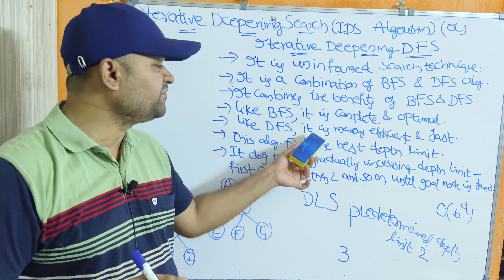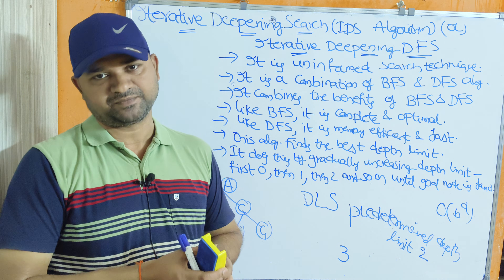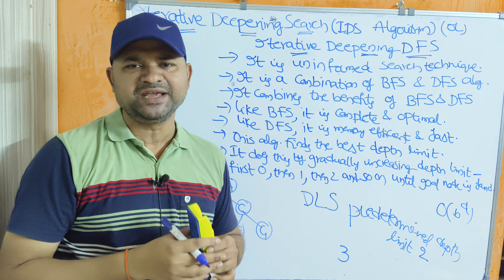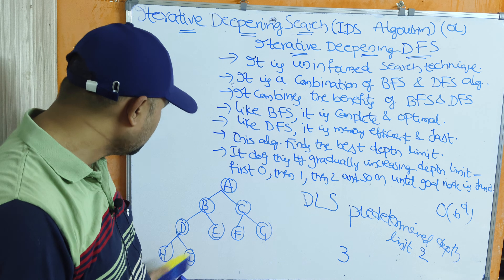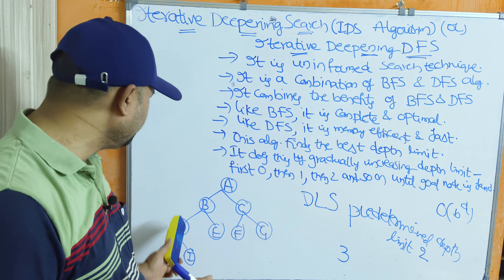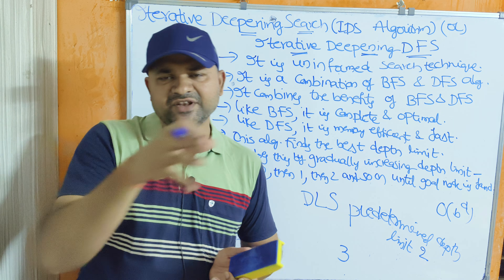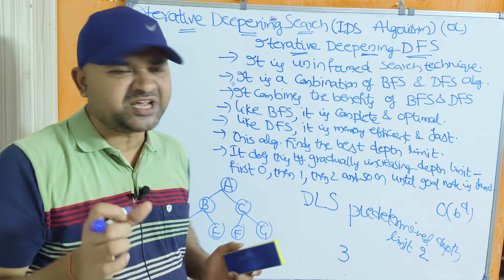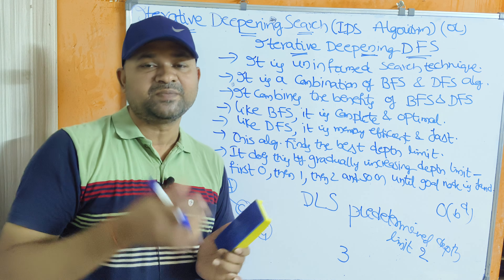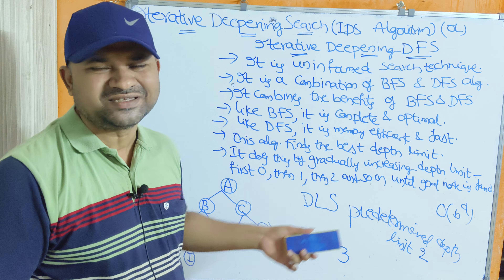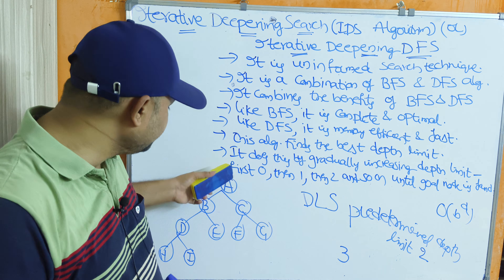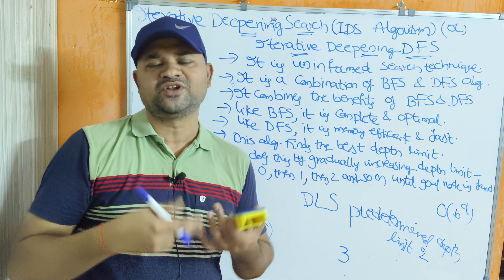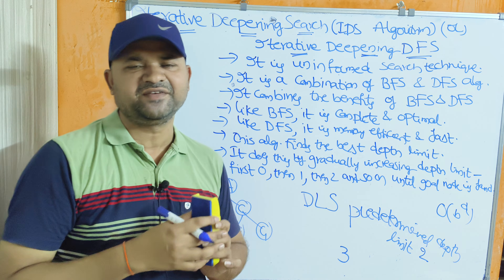The benefit of DFS inherited by IDS is memory efficiency. In DFS, we search for the goal node along one path at a time. If the goal node is not on that path, we backtrack and search another path. There is no need to store all nodes in the tree — we only store nodes on the current path, making it very memory efficient. Less memory is required compared to BFS.